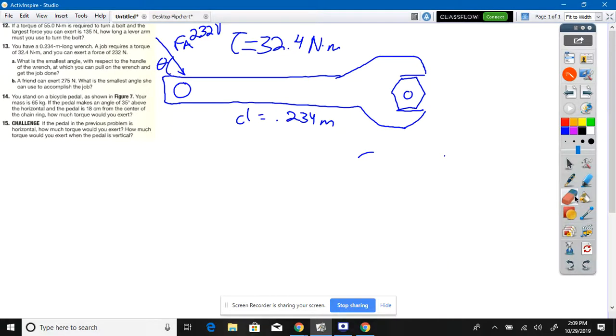Number B: this thing is the exact same problem except 275 Newtons instead of 232. What do you get for part B? The only thing that changes is your force but you do the exact same equation. 30 degrees, all right.